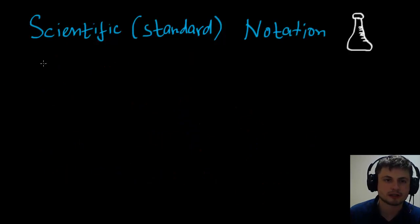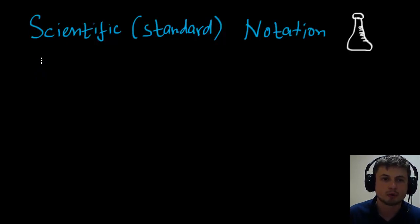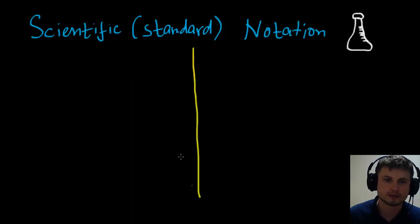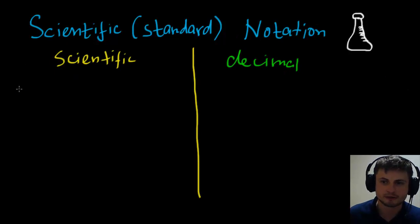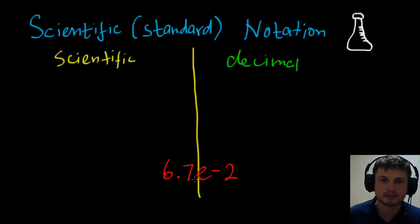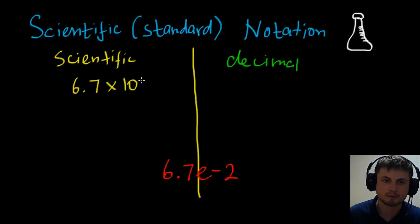This is actually an example from your book that deals with calculator notation. Whatever answer you get on your calculator, you cannot just write that down on your IB test — you actually have to convert it into either scientific notation or decimal. So let's divide this into two parts: scientific and decimal. Your calculator gives you the value 6.7E-2. For scientific notation, you simply rewrite it as 6.7 times 10 to the power of minus 2.